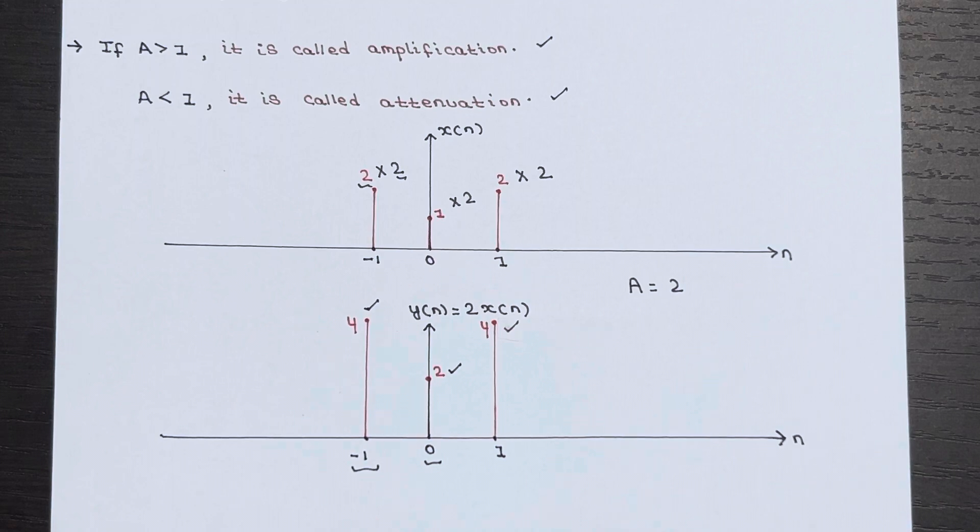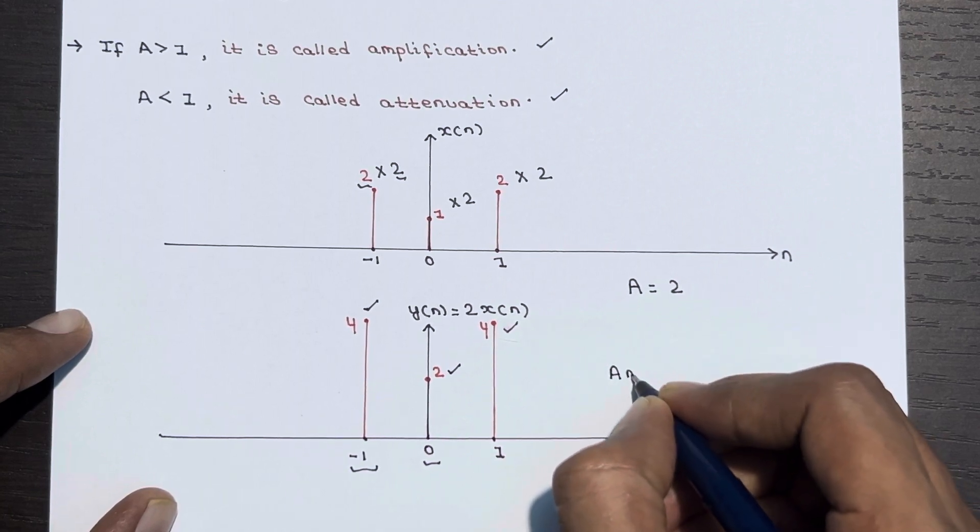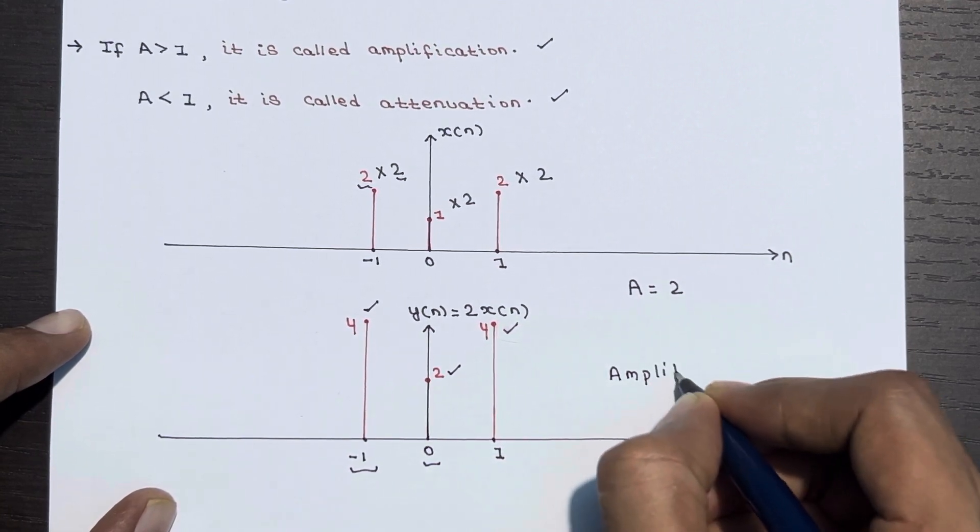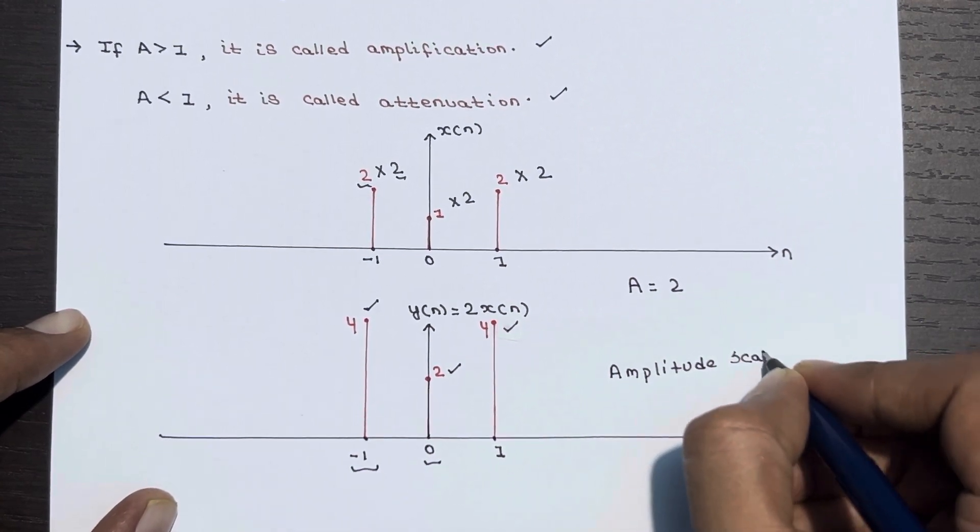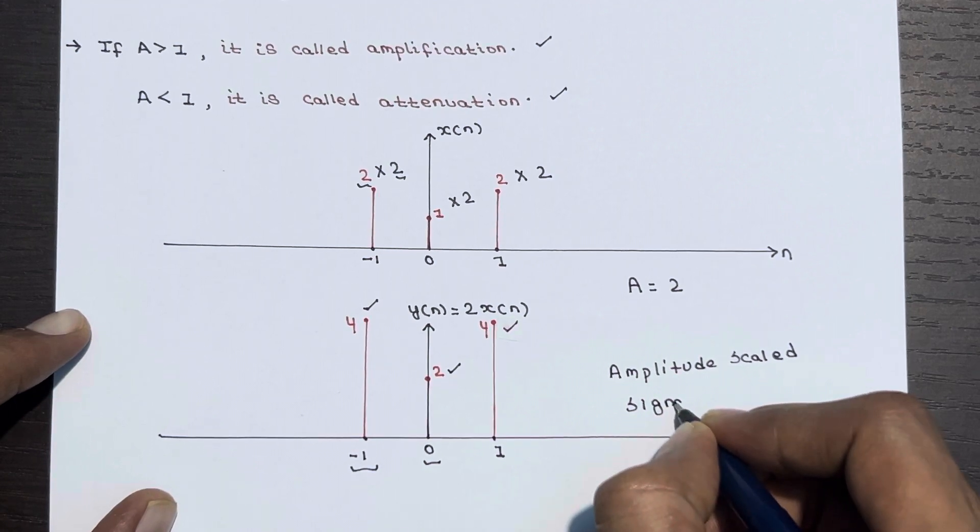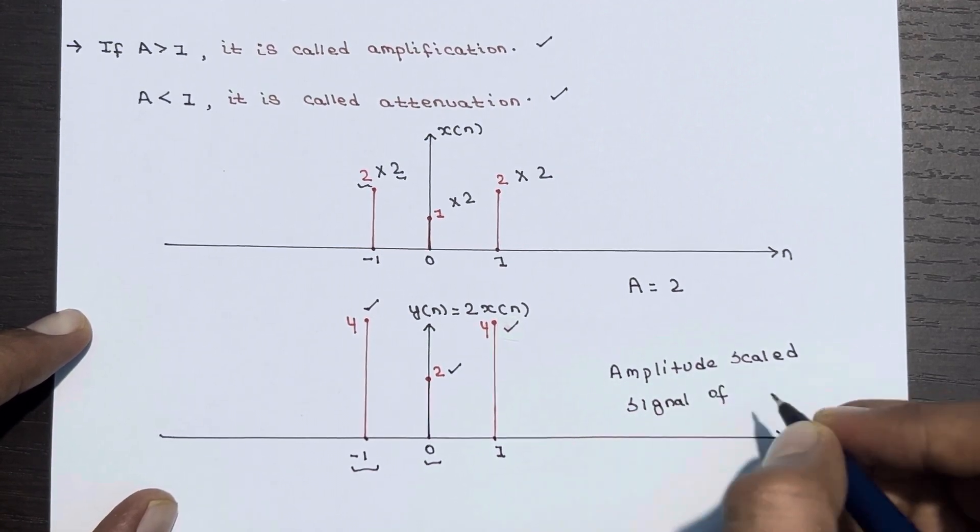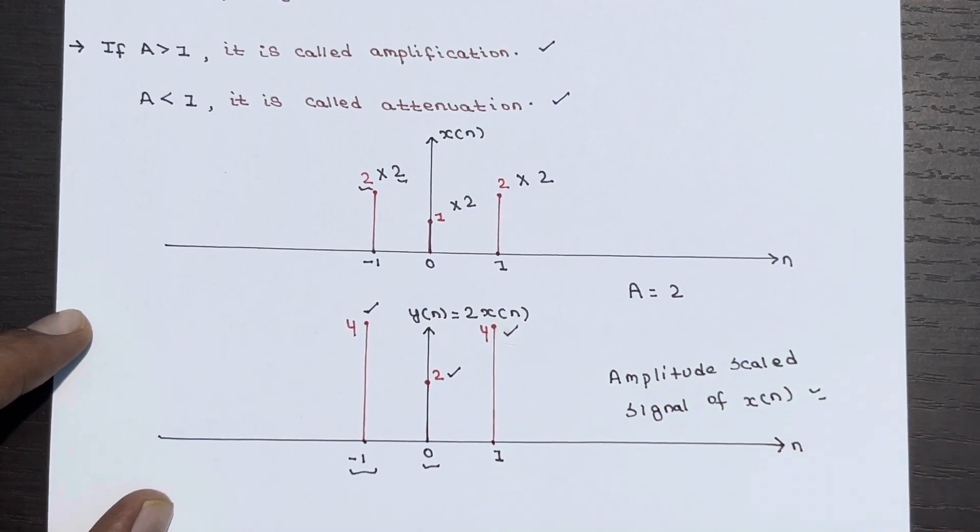That's all for amplitude scaling. In the next lecture, we'll discuss time scaling. This signal is called the amplitude scaled signal of x(n). Hope this is clear to you.